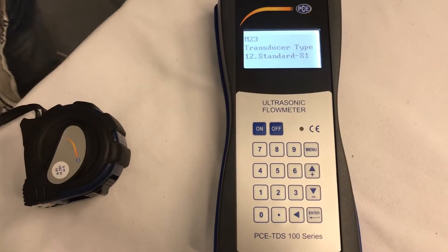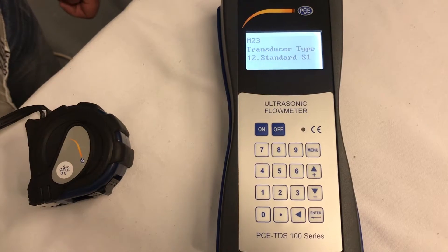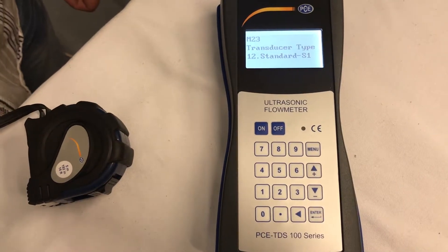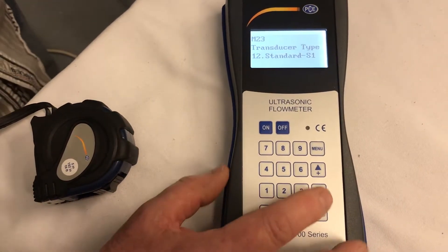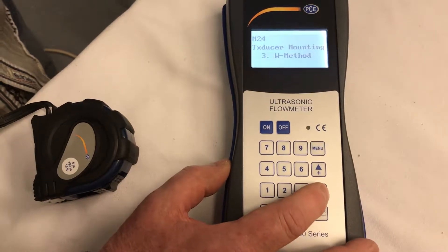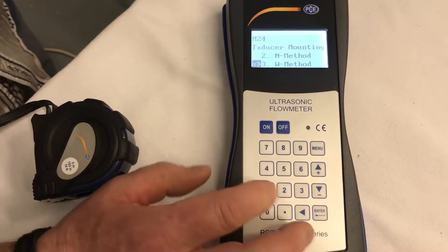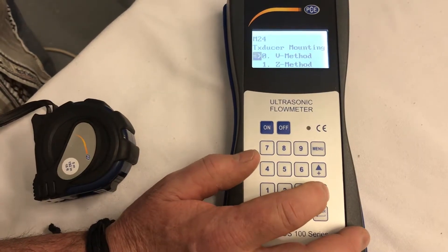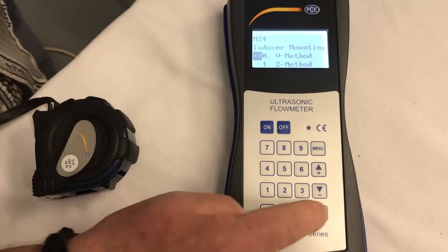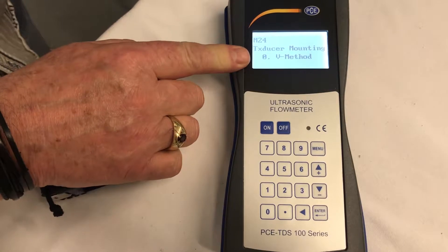Next, we're going to select the method, which is the V method for this particular pipe, which is M-24. So we go down to M-24, and we don't want the W, so we enter. We go down to V method. V method, select, enter. Now we have the V method.